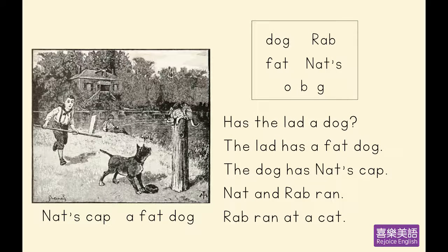Please try to shadow as I read along. Nat's cap, a fat dog. Has the lad a dog? The lad has a fat dog. The dog has Nat's cap. Nat and Rab ran. Rab ran at a cat. Very well.